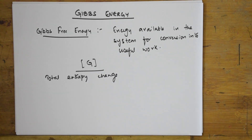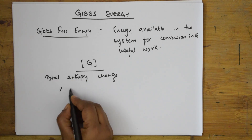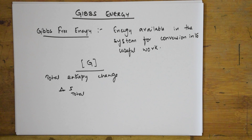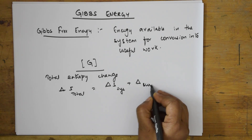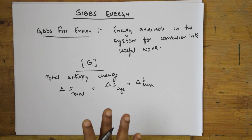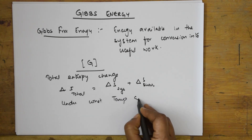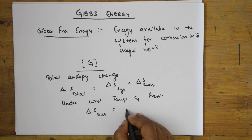The total entropy change accompanies a process or a system. It is denoted as ΔS_total. The total entropy change depends on the entropy change of the system plus the entropy change of the surroundings. Under conditions of constant temperature and pressure, ΔS_surroundings becomes equal to -ΔH_system / T. I have shown this derivation in the previous video.